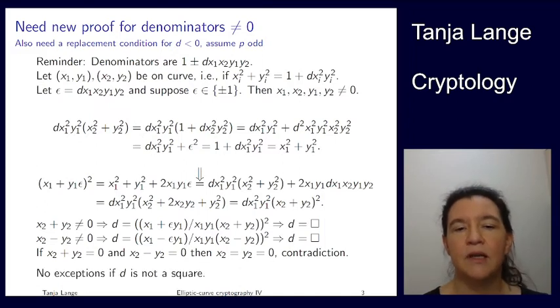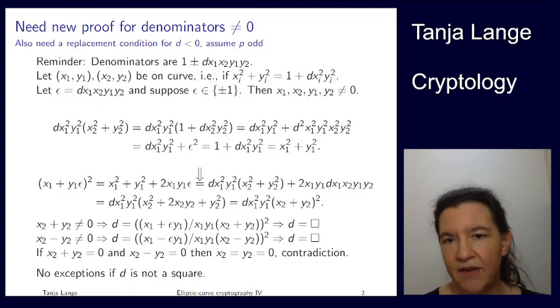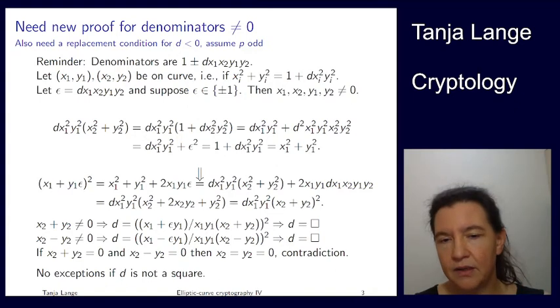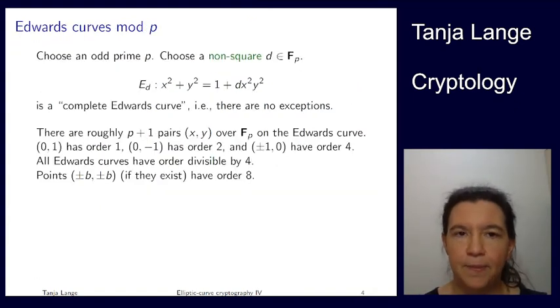So if d is not a square, we do not have any exceptions. If d happens to be a square, well, it's still a very special arrangement that you must hit. But for each x1, y1, you can find an x2, y2 so that things fail. But if d is not a square, things cannot fail.